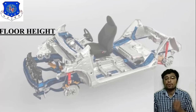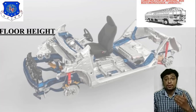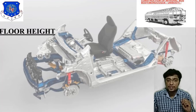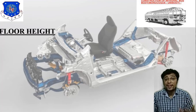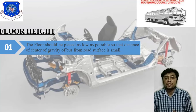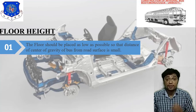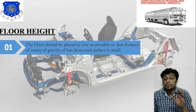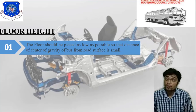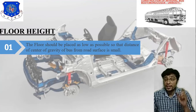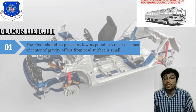The first topic is floor height. Here I have attached an image related to bus body, showing the main monocoque chassis — normally in bus body we use monocoque chassis. The floor should be placed as low as possible, so that the distance from the center of gravity of the bus to the road surface is very small. This is an important concept related to vehicle performance, as it improves vehicle performance.